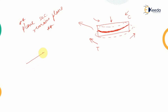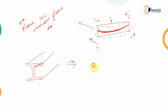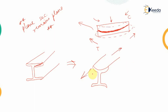Consider an I-section which was originally in its normal shape. After the application of the load, it tries to warp up, resulting in a deformed shape. This warping is due to the non-uniform stress distribution when the section is subjected to tensile forces.